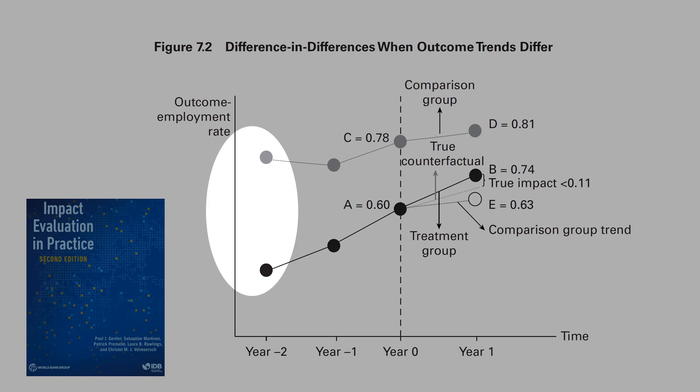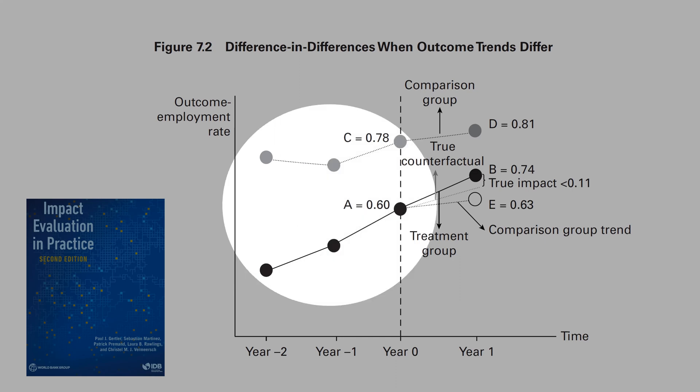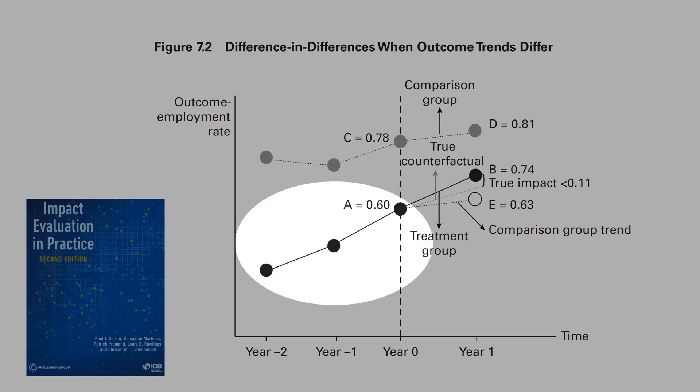And the obvious point is that the two groups are different — they are different in the outcome variable. That's why, in general, for diff-and-diff, you add many control variables in the specification. The logic is to make the control and treatment group as similar as possible.